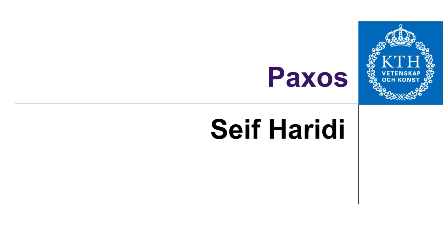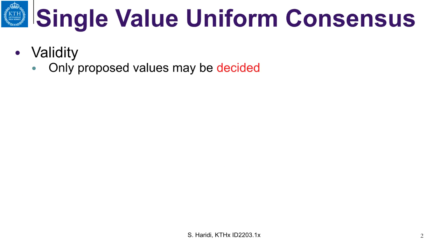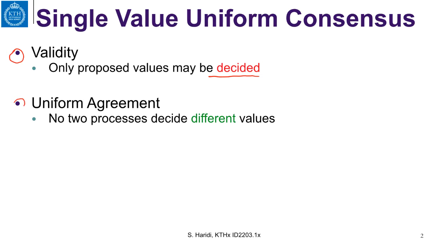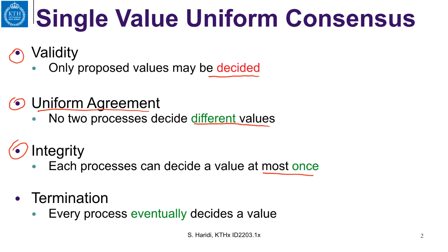In this lecture, we are going to present the Paxos algorithm for single-value consensus. Let us remember the single-value uniform consensus problem. We have the following properties: Validity, which says only proposed values may be decided, so you cannot decide on a value that is not proposed. Uniform agreement, saying that no two processes decide different values. Integrity, which says each process can decide a value at most once. And termination: every process eventually decides a value.